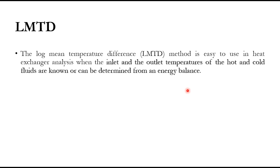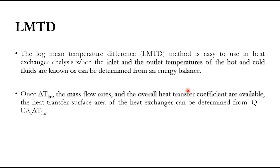In LMTD, we learned that we need to compute the heat transfer area, and we are given the values of inlet and outlet temperatures of hot and cold fluids. Once outlet and inlet temperatures are known, we can calculate the log mean temperature difference. We are also given the mass flow rates and the heat transfer coefficient. Using the equation Q = U·A·ΔT_LM, we can compute the heat transfer area, where Q is the heat transfer rate, U is the overall heat transfer coefficient, and ΔT_LM is the log mean temperature difference.